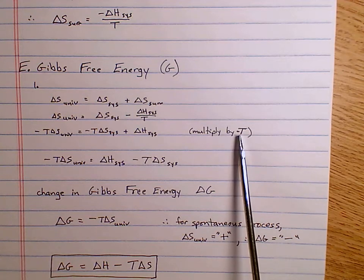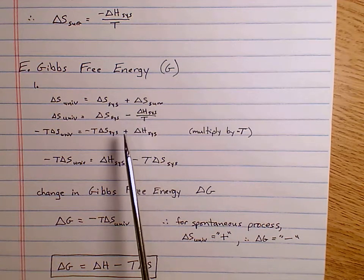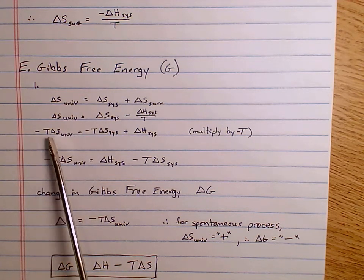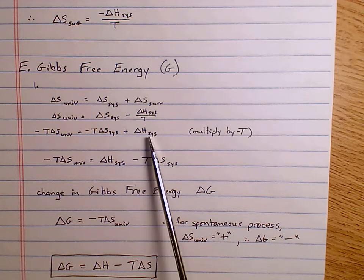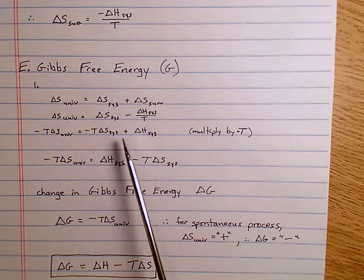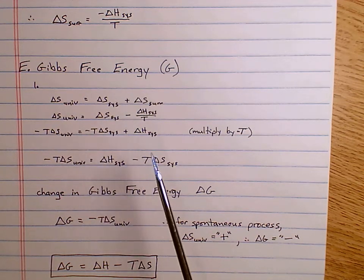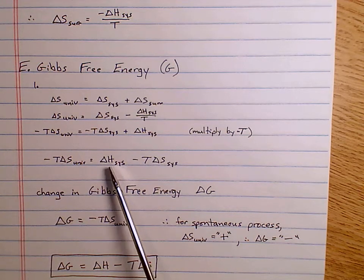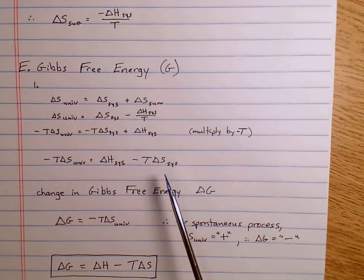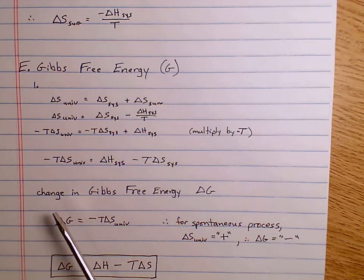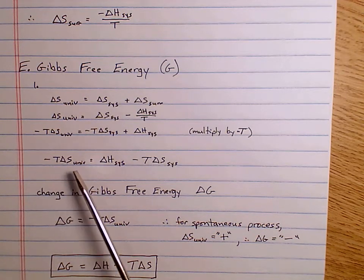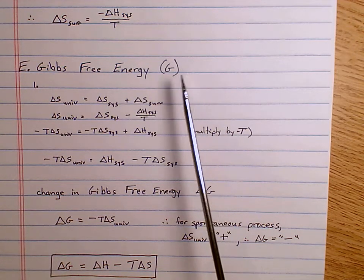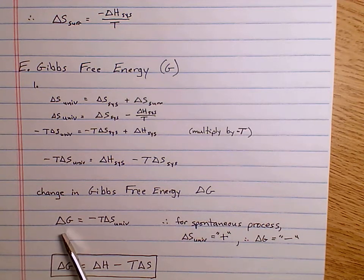If we multiply everything by negative T, that gets rid of the minus sign — it becomes plus — and gets rid of that T. So we get negative T in front of delta S system and negative T in front of delta S universe. Rearranging: negative T delta S of the universe equals delta H of the system minus the temperature times the entropy change of the system. This value, negative T delta S universe, is called the change in Gibbs free energy, delta G.